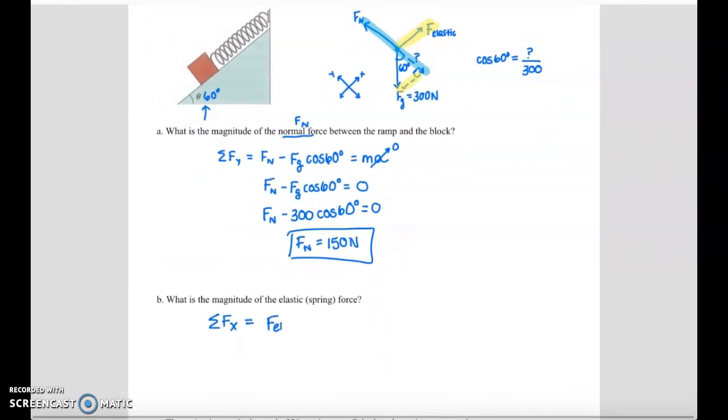We have the elastic force up the ramp minus Fg sine 60 degrees down the ramp. If you're confused where that sine 60 degrees comes from, sine 60 degrees, sine is opposite over hypotenuse. And Newton's second law says I can set that equal to ma. Again, acceleration is zero because we are at rest.